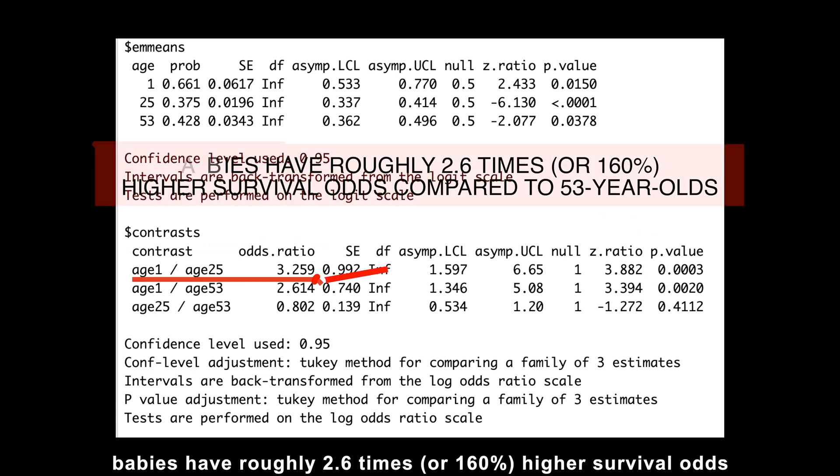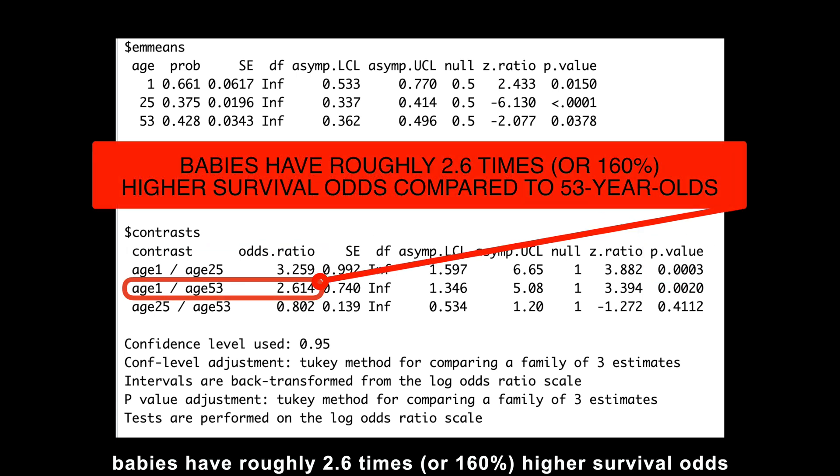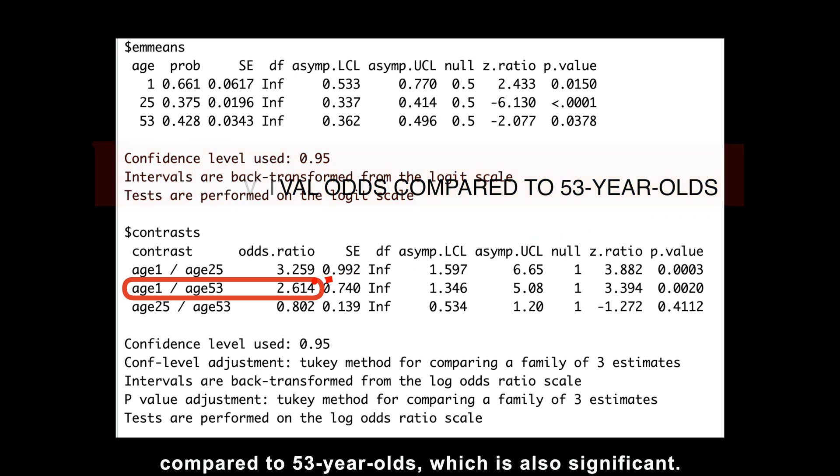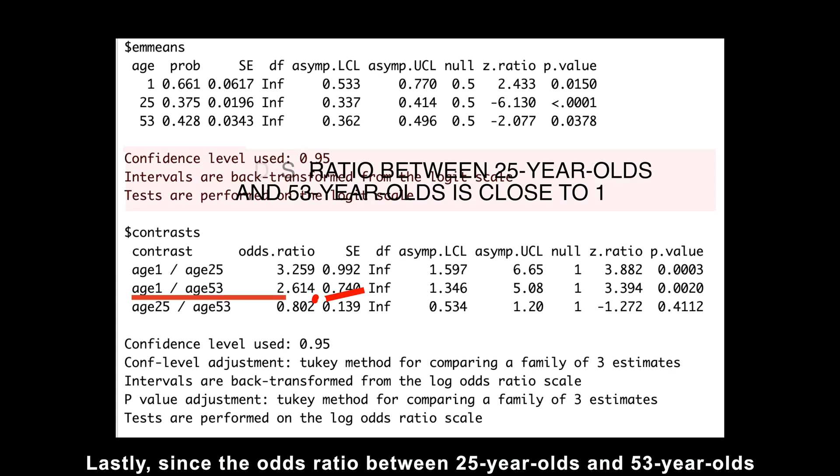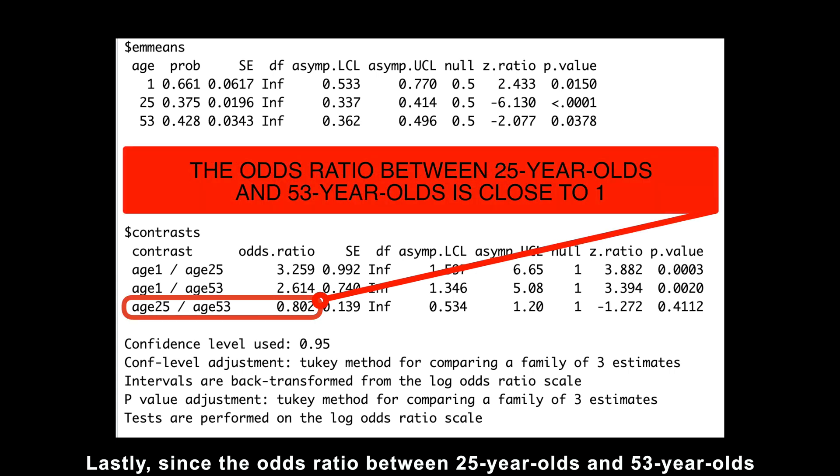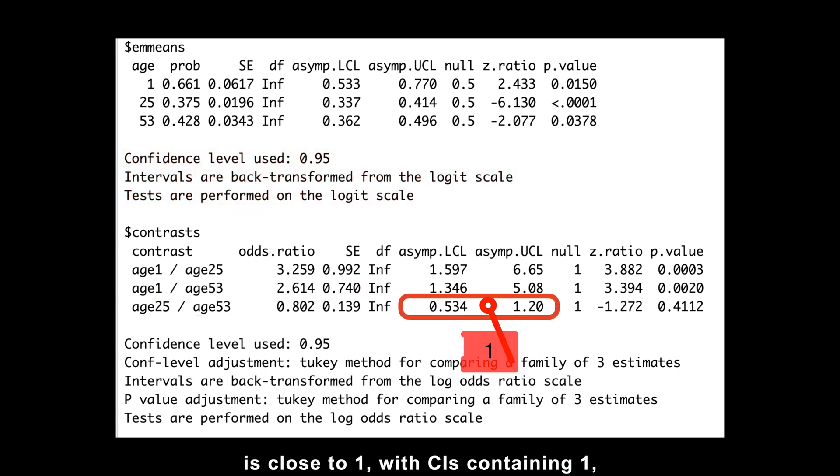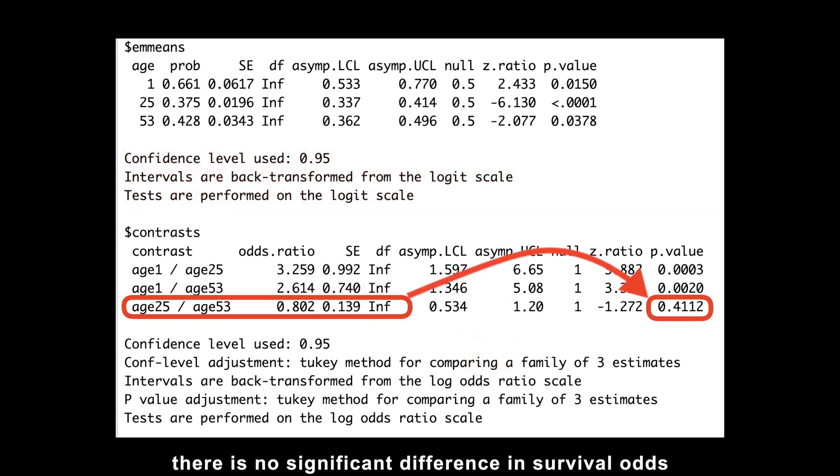Similarly, babies have roughly 2.6 times, or 160% higher survival odds compared to 53-year-olds, which is also significant. Lastly, since the odds ratio between 25-year-olds and 53-year-olds is close to 1, with confidence intervals containing 1, there is no significant difference in survival odds between these age groups.